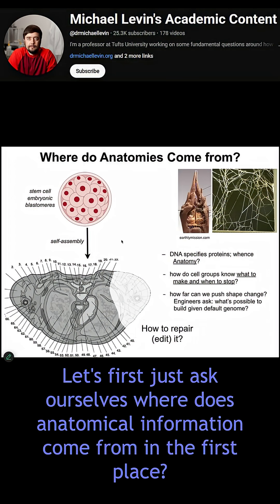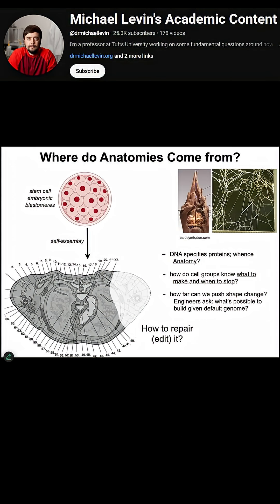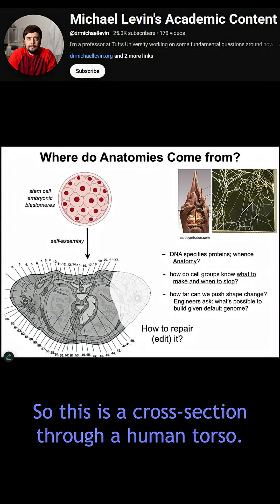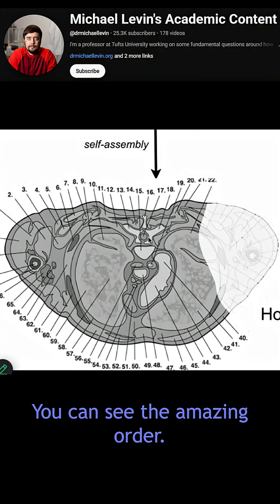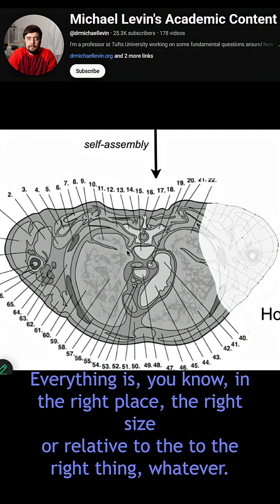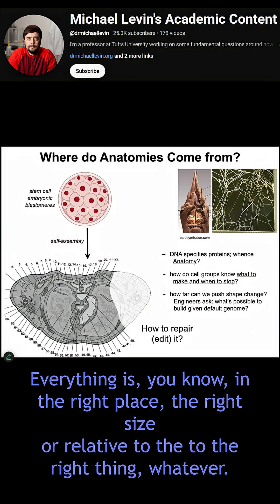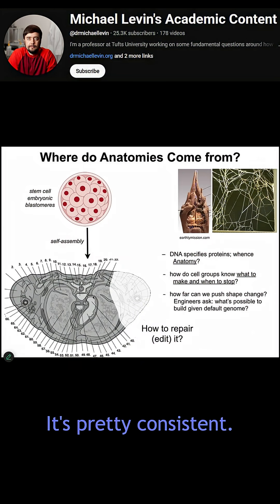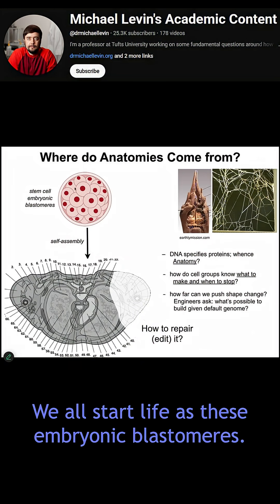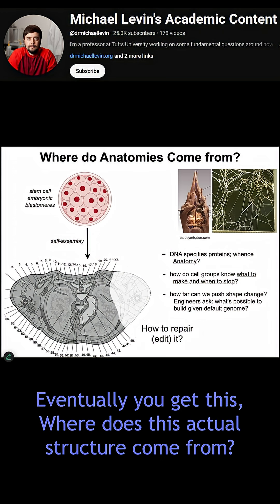Let's first just ask ourselves, where does anatomical information come from in the first place? This is a cross-section through a human torso. You can see the amazing order — everything is in the right place, the right size, relative to the right thing. It's all here. It's pretty consistent. We all start life as these embryonic blastomeres, and eventually you get this. Where does this actual structure come from?